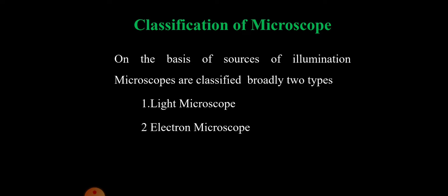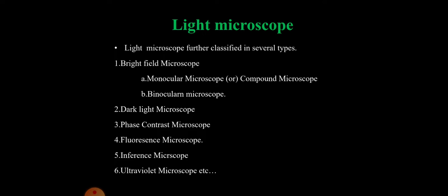One is light microscope, another is electron microscope. The light microscope is further classified into different microscopes: first one is bright field microscope, dark field microscope, phase contrast microscope, fluorescence microscope, interference microscope, and ultraviolet microscope. In bright field microscopes there are two types available.